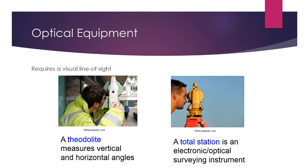Optical equipment works by line of sight - you have to be able to see your target. A lot of times getting from point A to point B requires multiple setups because buildings or terrain get in the way. On the left is a theodolite, used to measure both vertical and horizontal angles. The person shown appears to be measuring a vertical angle - starting level and raising up to sight the top of a building.